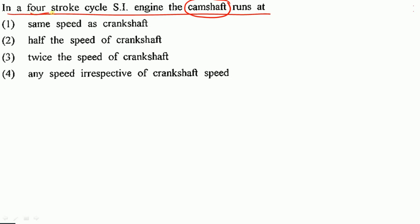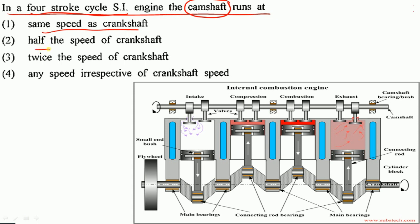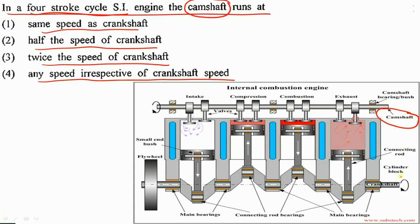In a 4-stroke cycle SI engine, the camshaft runs at: same speed as crankshaft, half the speed of crankshaft, twice the speed of crankshaft, or any speed irrespective of crankshaft speed? The camshaft speed is half the speed of the crankshaft. So option 2 — half the speed of crankshaft — is the correct option.